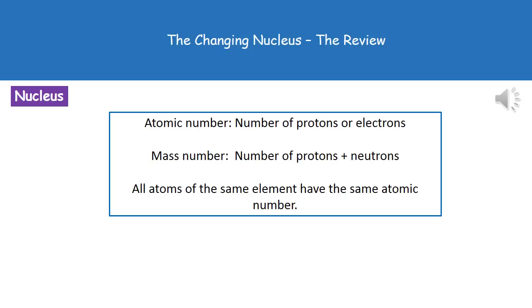Now, what we actually find is that all atoms of the same element will have the same atomic number. But remember, different isotopes could have different mass numbers.